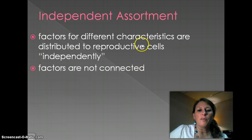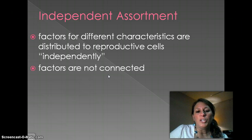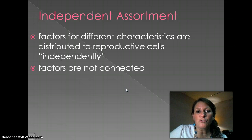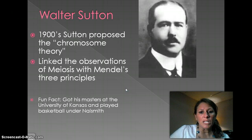Independent assortment is talking about the reproductive cells being independent of each other, meaning that factors are not connected. For example, we may know people in a population who have blonde hair and blue eyes, and they often show up together — but you probably know someone with blonde hair and brown eyes. So those two traits are not connected; they are independent of each other. That doesn't mean there aren't some traits that are linked — that's just one example of them not being linked.